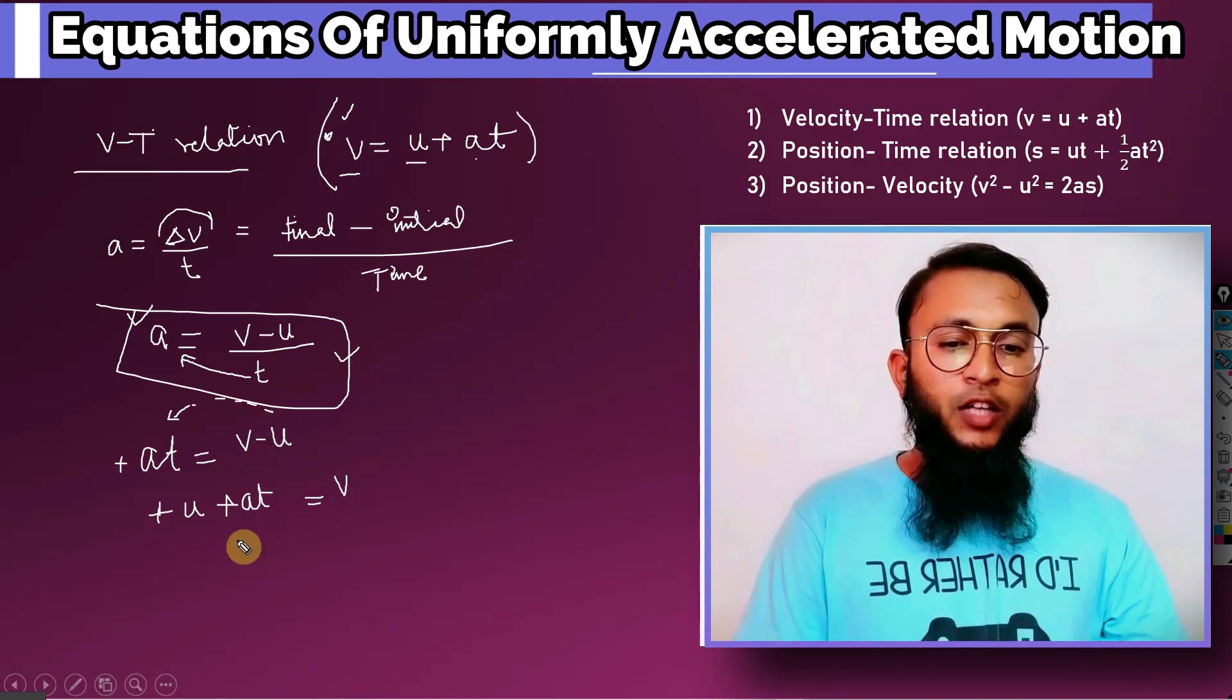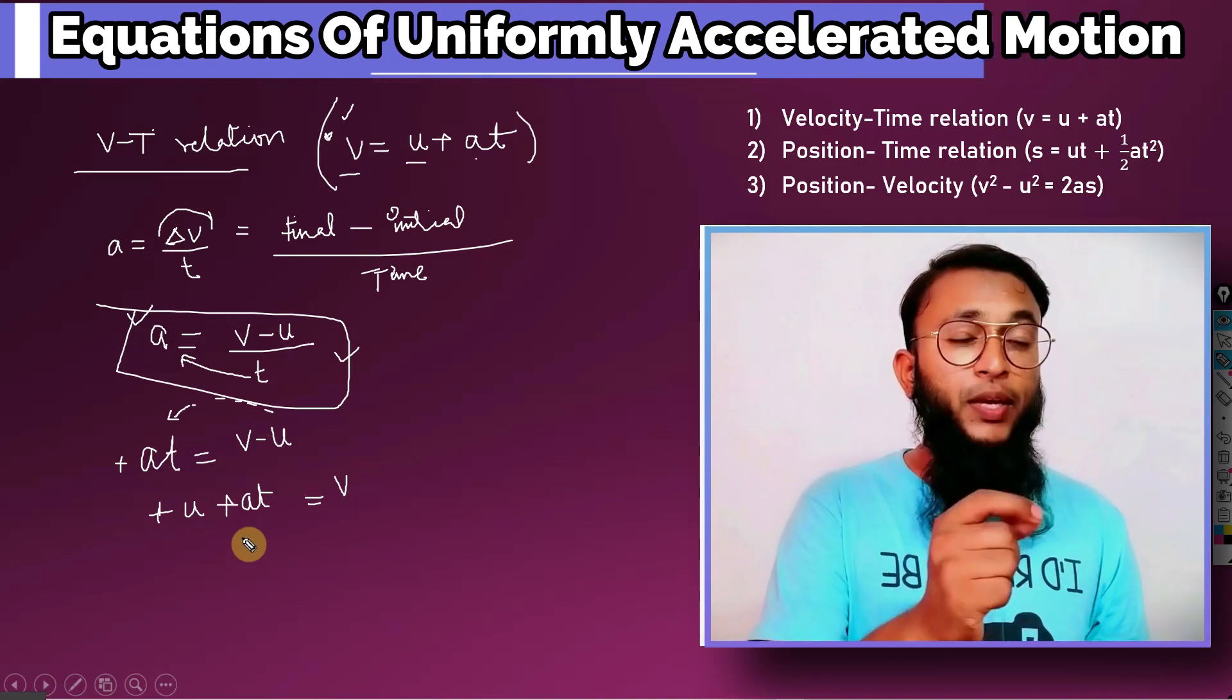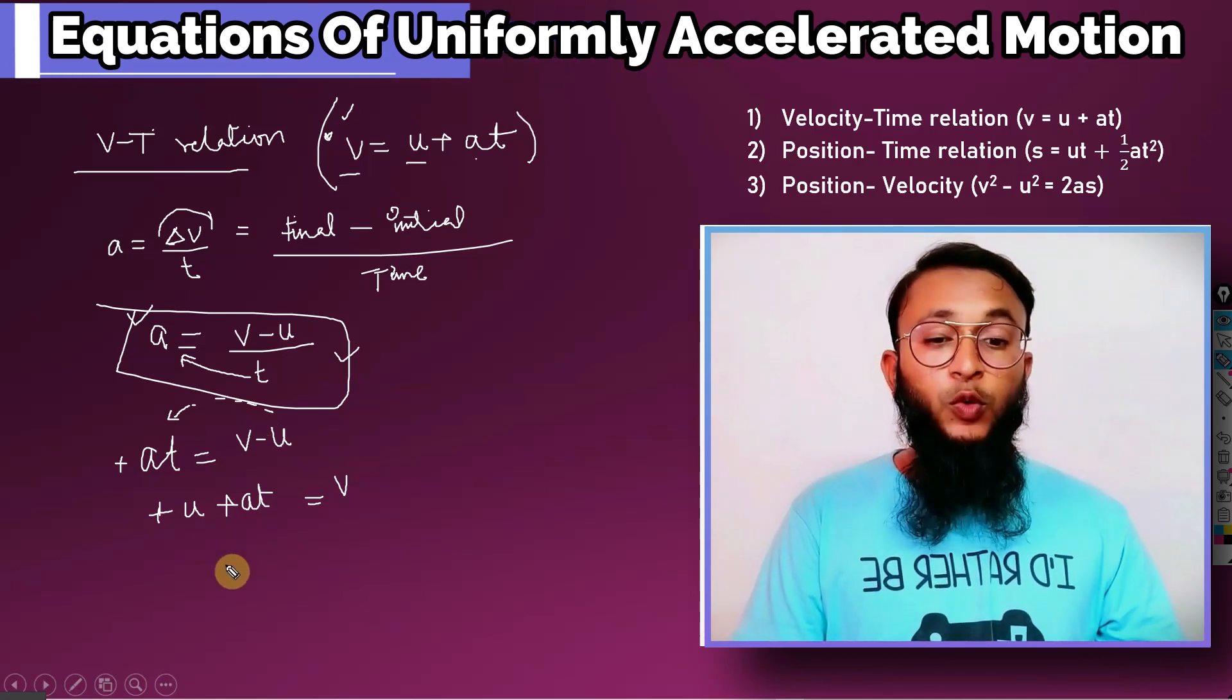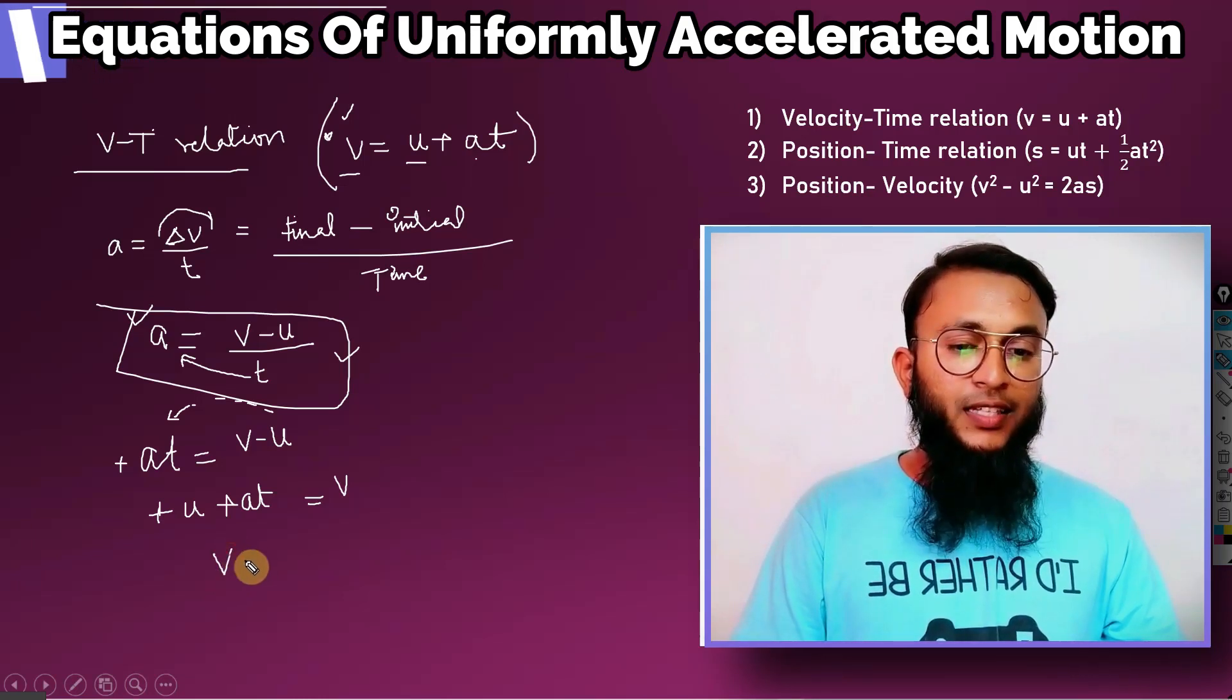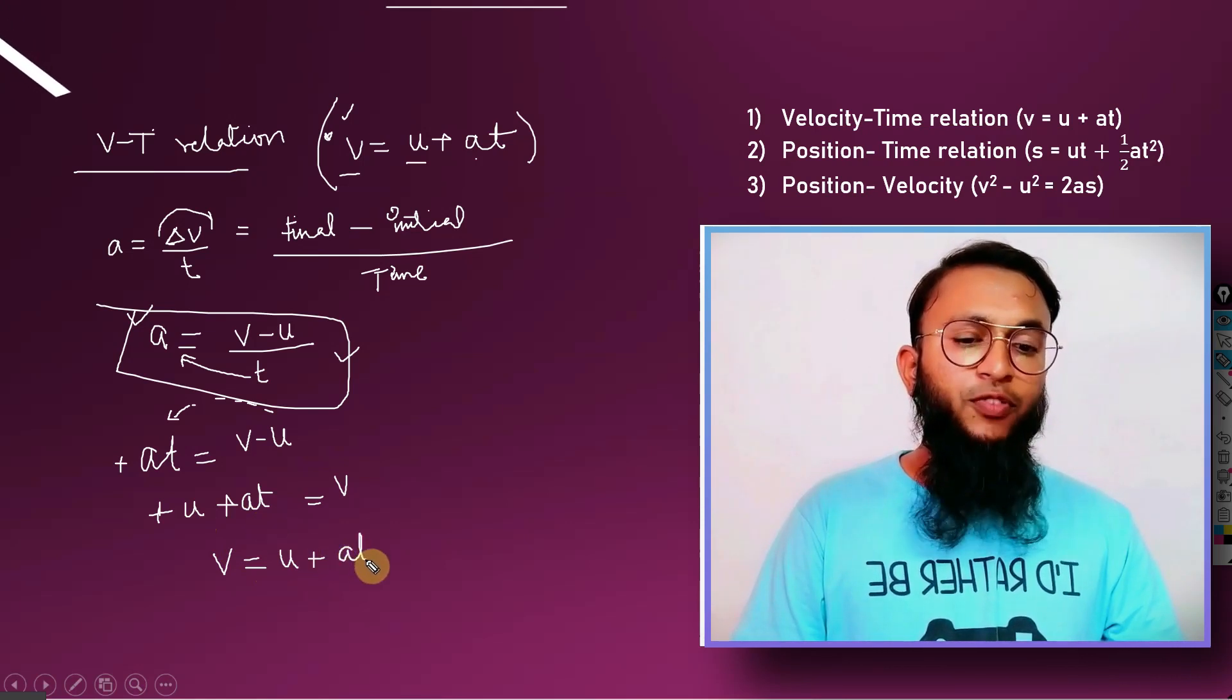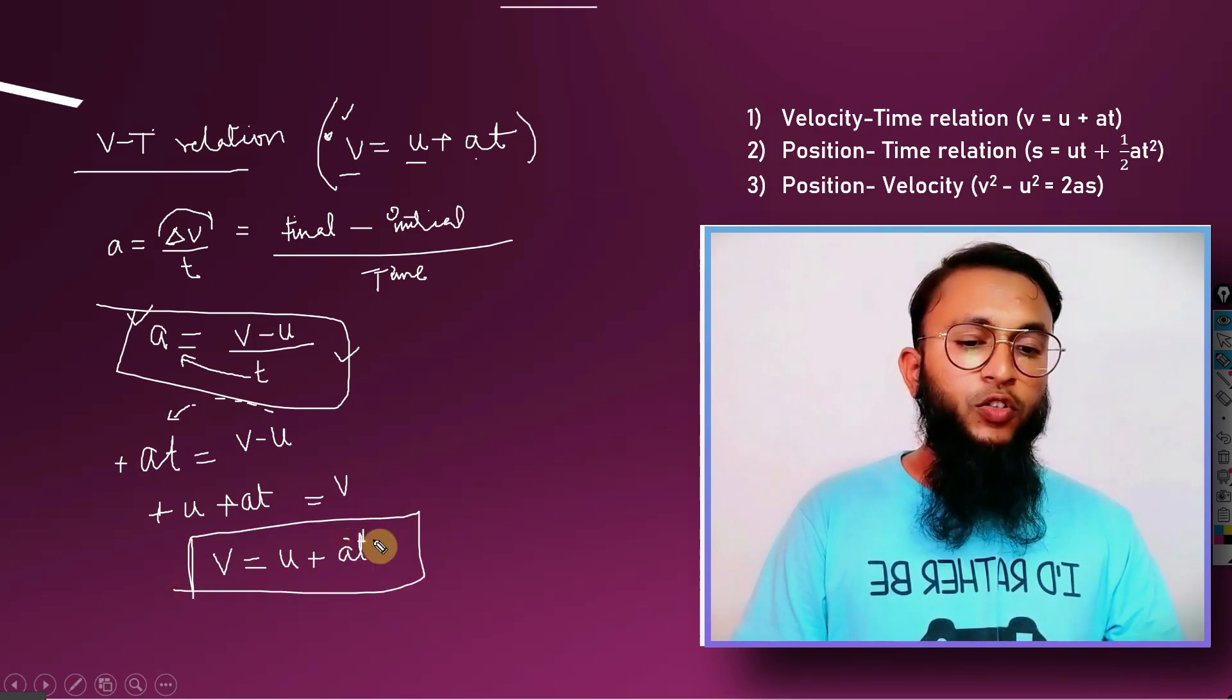So what will I do? Since you know mathematically that a equals b, so b will also equals a. So in this way we will shuffle the LHS to RHS and RHS to LHS. So we'll write v equals what is available here: u and plus at. We got the first equation easily. V equals u plus at. Thank you so much guys.